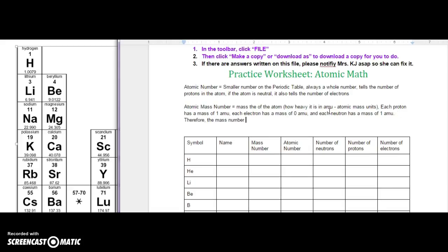Therefore, the mass number equals the number of protons, and yes, the hashtag actually means number. Also, if you're in music, it means the sharp sign. So number of protons plus the number of neutrons. To find that information, we look at the periodic table.